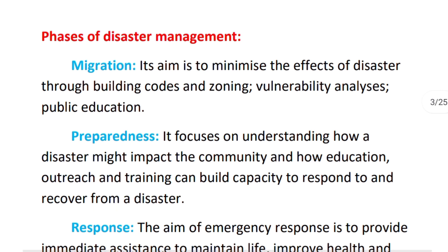We can see what disaster management phases are. The first is Mitigation. Mitigation means moving from one place to another when a disaster is going to happen, so that it can be minimized. This includes building zoning, identifying particularly vulnerable areas, and public education.